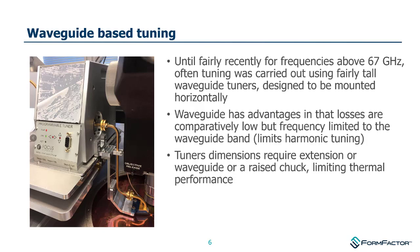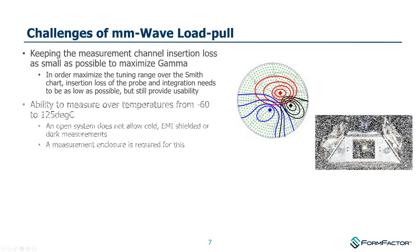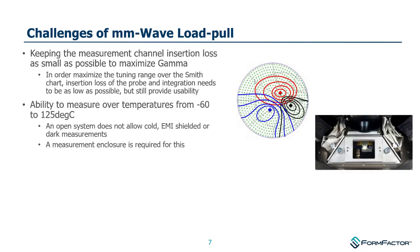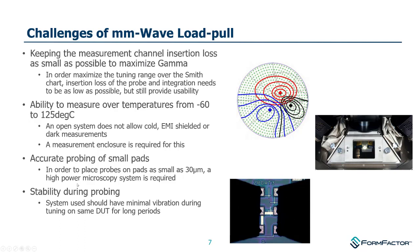Up until recently, for frequencies above 67 GHz, a lot of this work was done using waveguide tuners. Waveguide is great because the losses are comparatively low, but it is frequency-limited due to the band of the waveguide. The challenges of load pull are: low insertion loss to get as much of the Smith chart as possible, the ability to do thermal work which typically involves a cable, access to small pads requiring good microscopes with short working distances, and good stability during probing.